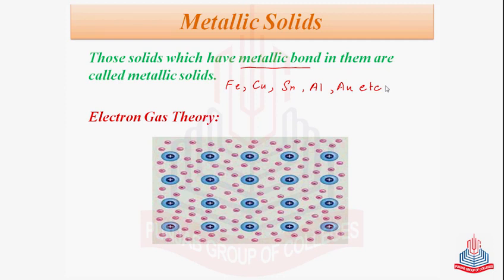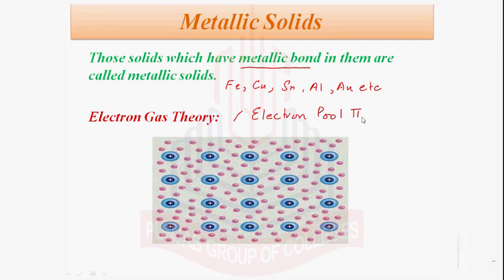After each metal atom loses its valence electron, a pool of electrons is created — that is why this theory can also be called the electron pool theory. These valence electrons are now present in the interstitial spaces. The positively charged ions occupy definite positions at measurable distances from each other in the crystal lattice, while the valence electrons are free and not attached to any individual ions or pair of ions — rather they belong to the whole crystal.